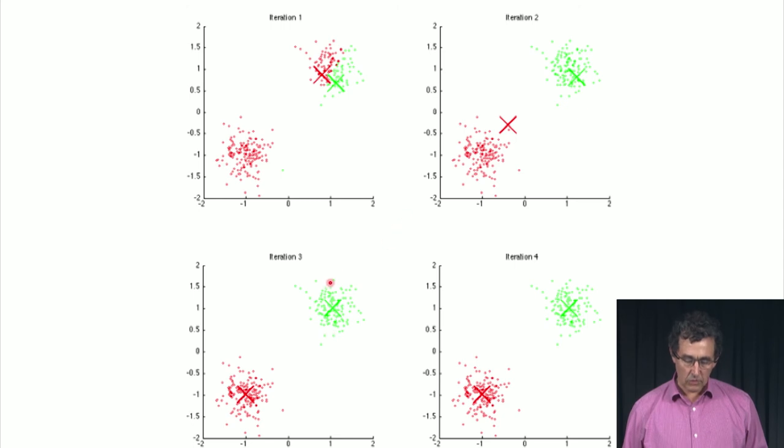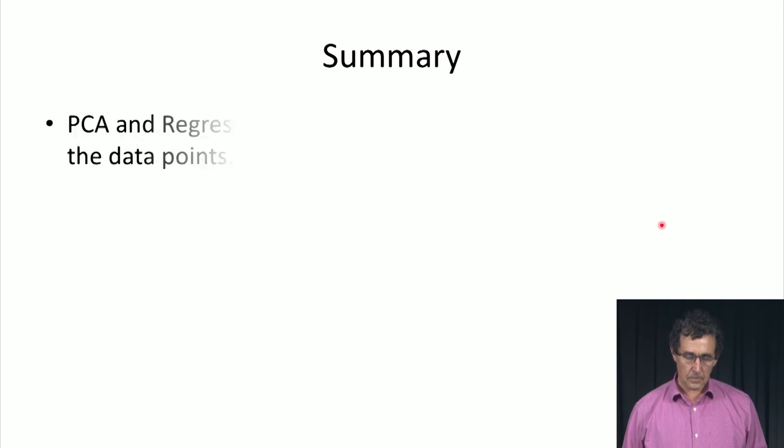After another iteration, we have the green in the center of the green points and the red in the center of the red points. From there on, things will not change. The algorithm converges very quickly.